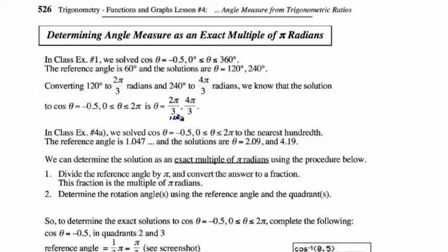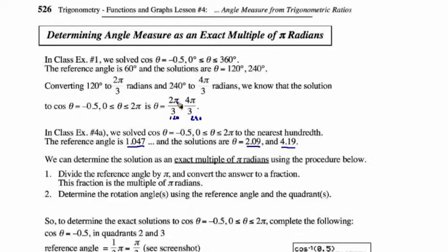2 pi over 3 is equivalent to 120 degrees, and 4 pi over 3 is equivalent to 240 degrees. In class example 4, we solved cos theta equals negative 0.5 rounded to the nearest hundredth in radian measure. We found the reference angle was 1.047, and the solutions were 2.09 and 4.19. Now the solutions should be 2 pi over 3 and 4 pi over 3.